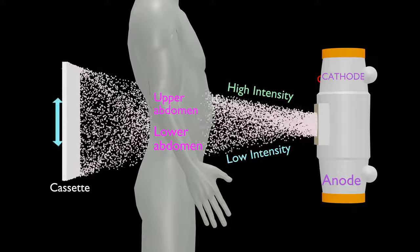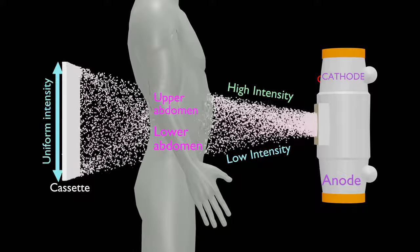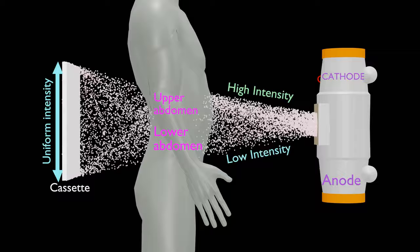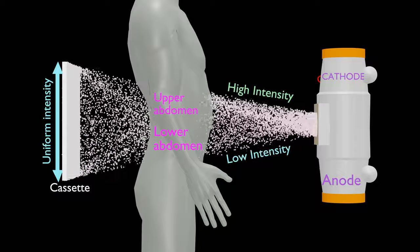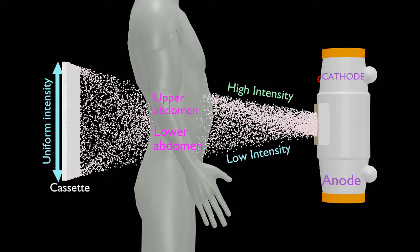Ultimately, the cassette or image receptor will receive a rather uniform beam of x-rays. A uniform x-ray beam will produce uniform optical density to be better visible to human eye.